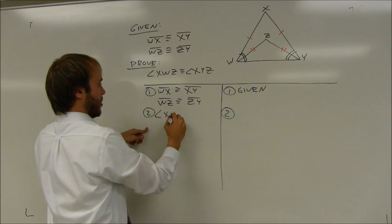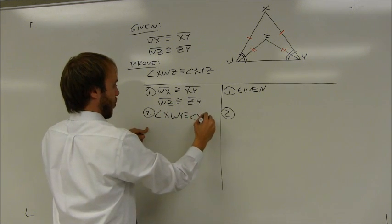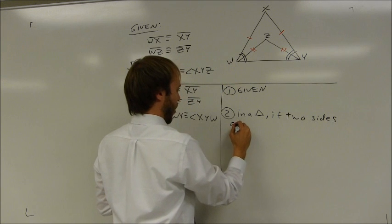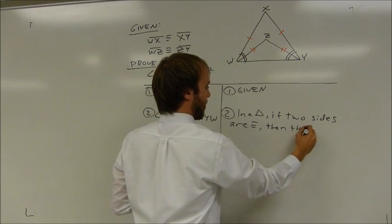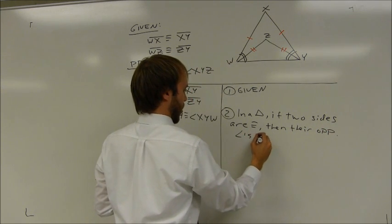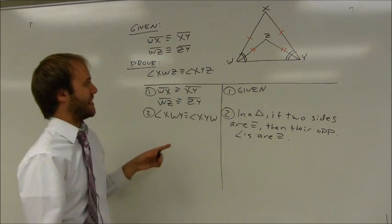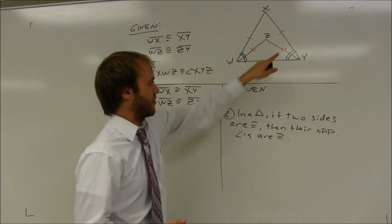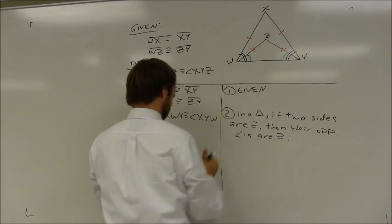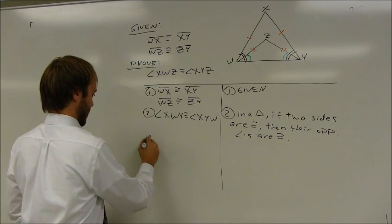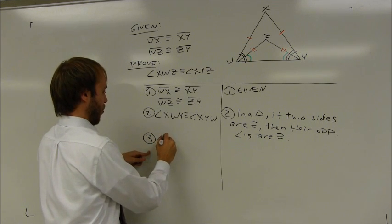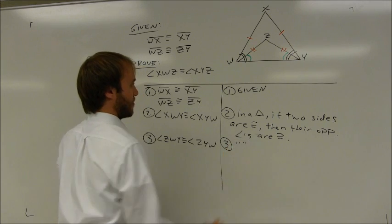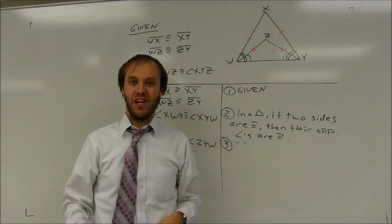So angle XWY is congruent to angle XYW. In a triangle, if two sides are congruent, then their opposite angles are congruent. In addition, I have a second isosceles triangle right here. These two segments are congruent, meaning that these two base angles are congruent. So I also know that angle ZWY is congruent to angle ZYW, for the same reason — in a triangle, if two sides are congruent, the two angles opposite those sides are congruent.